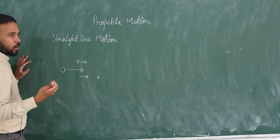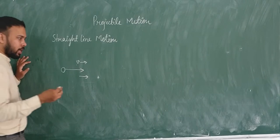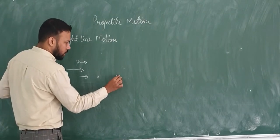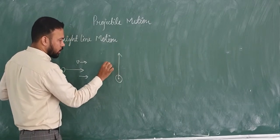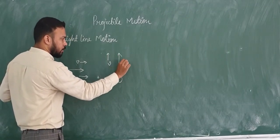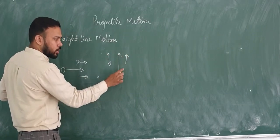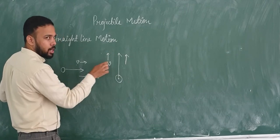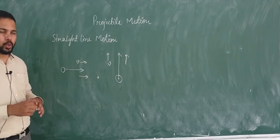Can we call vertical motion a straight line motion? Yes, we can, because in vertical motion, if we throw a particle vertically upward, then the velocity of motion is vertically upward and the direction of motion is also vertically upward. So the direction of motion and velocity of the particle are parallel to each other, and the motion is said to be straight line motion.